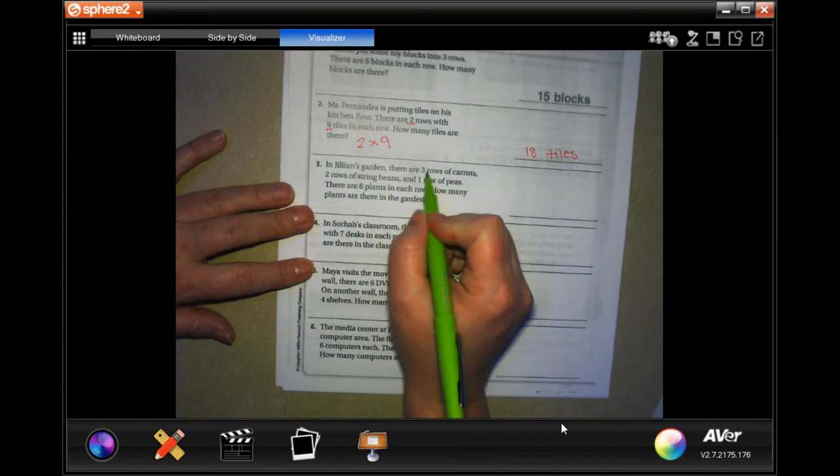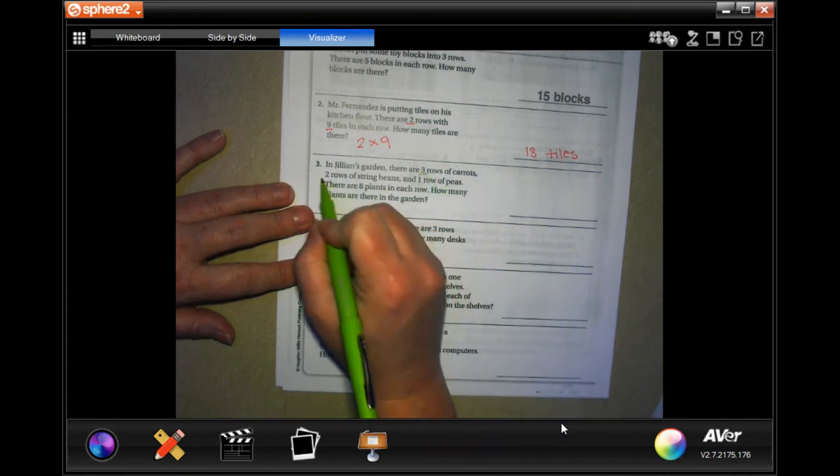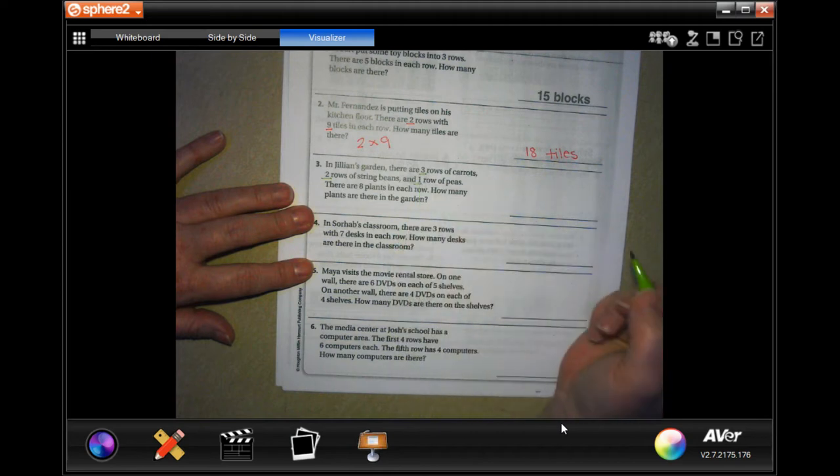In Jillian's garden, there's three rows of carrots, two rows of string beans, and one row of peas. There are eight plants in each row. So how many plants are there in this garden?